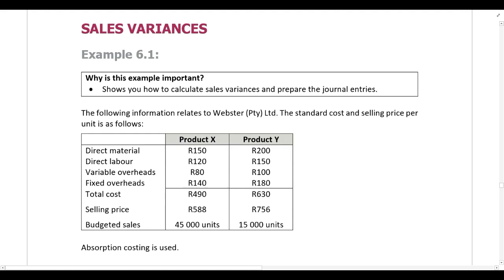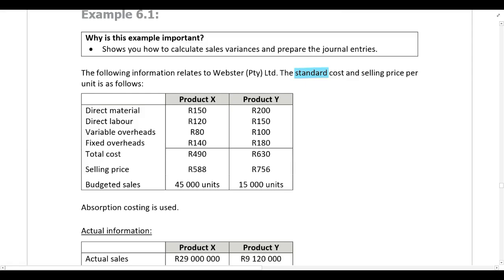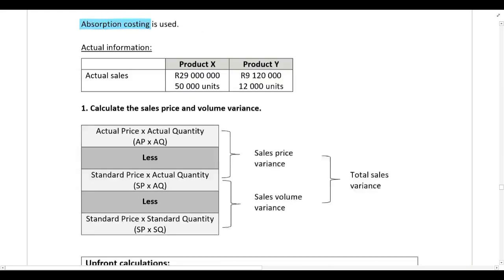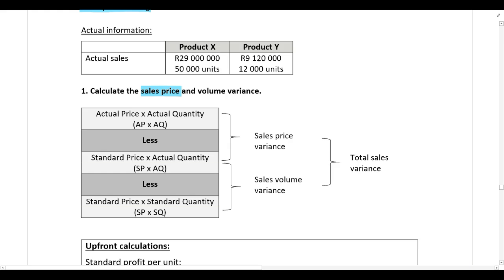The following information relates to Webster Pty Limited. Webster sells two different products, Product X and Product Y. You have been given the various standard costs and also the standard selling price per unit, along with budgeted sales in units. Absorption costing is used. You also have the actual information: for both products, the actual sales in rands and the actual sales in units.